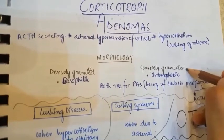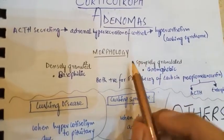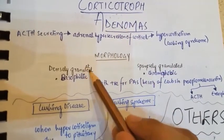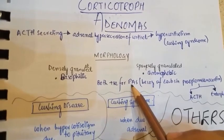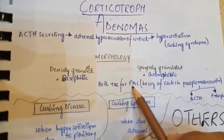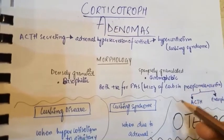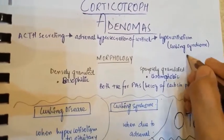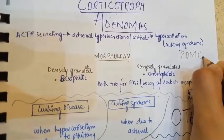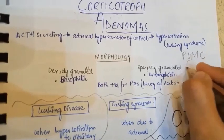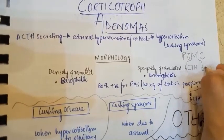The key difference in morphology of corticotroph adenomas compared to somatotroph and lactotroph adenomas is that corticotroph adenomas — whether densely or sparsely granulated — will be positive for periodic acid-Schiff (PAS) stain, because carbohydrates are present in pro-opiomelanocortin (POMC). The pituitary first synthesizes POMC, which further breaks down into ACTH and endorphins.